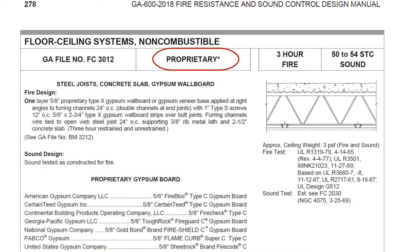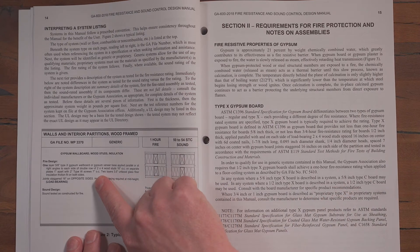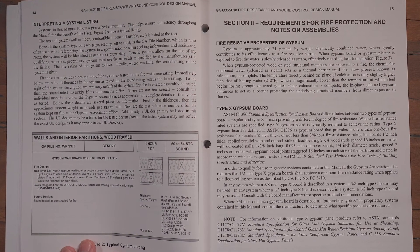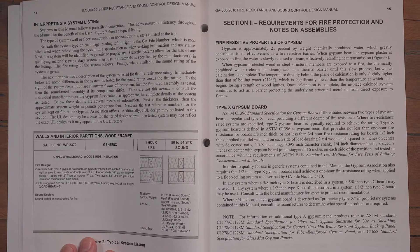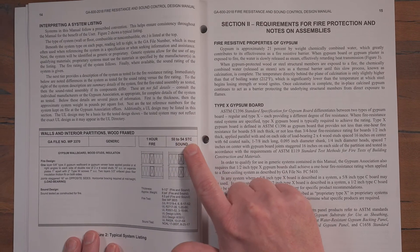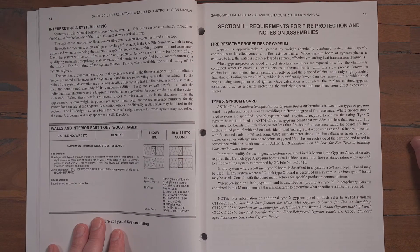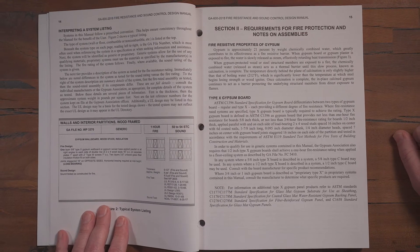Where the word proprietary appears in system descriptions, one or more of the system components is considered proprietary. Each proprietary system shall be built using the components specified by the company or companies listed under the detailed description for that system. System descriptions included in the GA600 manual are summaries. They begin with the material side exposed to the fire test and method of attachment, followed by a description of framing members and methods of installation. Finally, the unexposed side and its method of attachment is described. The fire rating, sound rating, and detail of assembly are also provided along with the thickness and approximate weight. Review the test report for complete information. Request fire or sound tests for generic systems from the Gypsum Association; proprietary test data is available from the manufacturer.